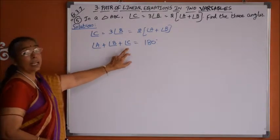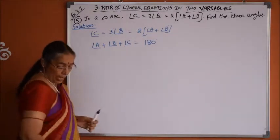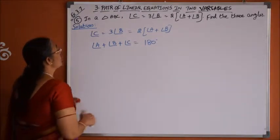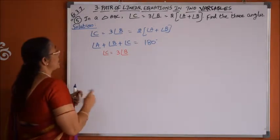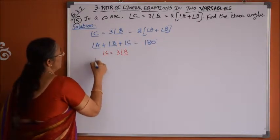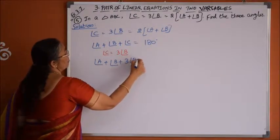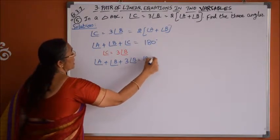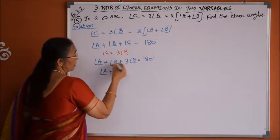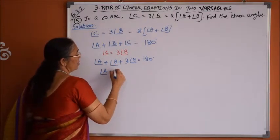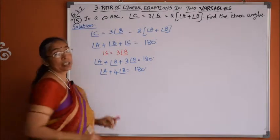We convert C in terms of angle A and angle B. From the first condition, angle C is equals to 3 times of angle B. Using that condition, we can write the first equation as: angle A plus angle B plus 3 times of angle B is equals to 180 degrees. Therefore the first linear equation in 2 variables: angle A plus 4 times of angle B is equal to 180 degrees. This is the first equation.